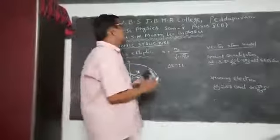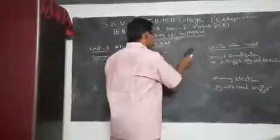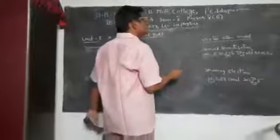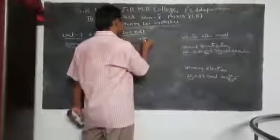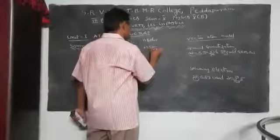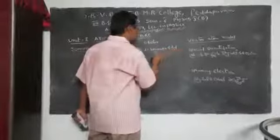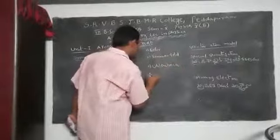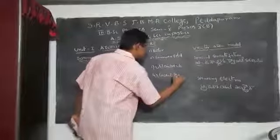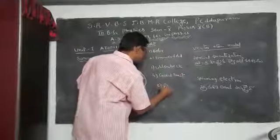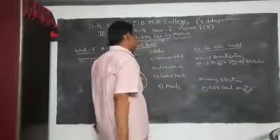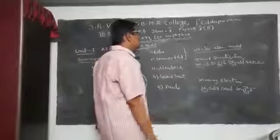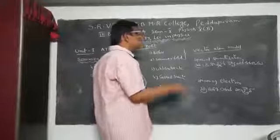The next topic is the vector atom model. In the explanation of the vector atom model, five famous scientists are noted: first is Lande, second is Sommerfeld, third is Uhlenbeck, fourth is Goudsmit, and fifth is Pauli. According to Bohr and Sommerfeld, they made an assumption called spatial quantization.